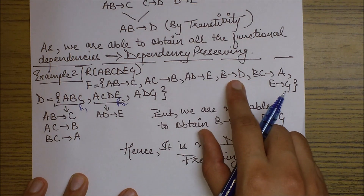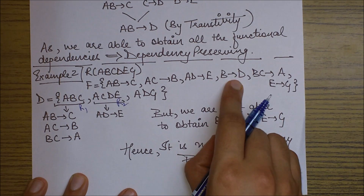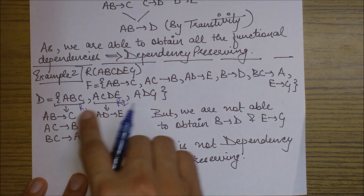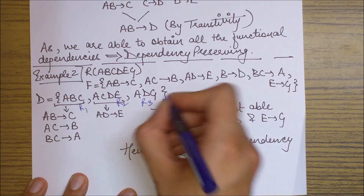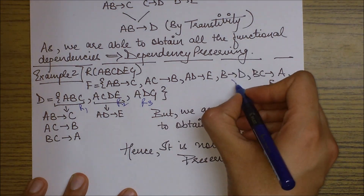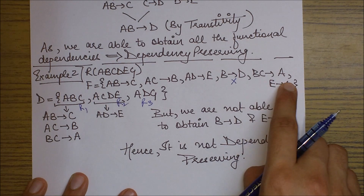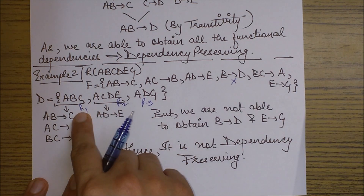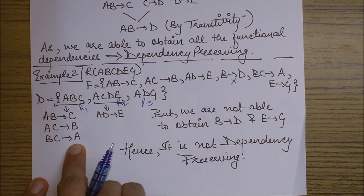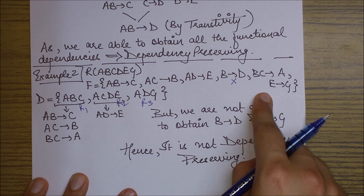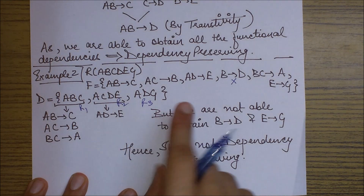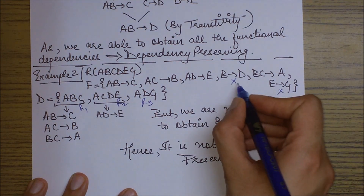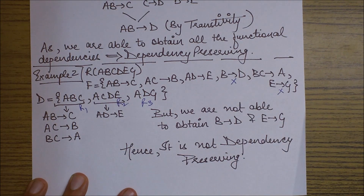Now we check B goes to D — B and D are never present together in any sub-relational schema R1, R2, or R3, so I am not able to derive this. Then BC goes to A: yes, I can obtain this from R1. Next, E goes to G — E and G are never present together in any of the sub-relations, so I am not able to obtain these two functional dependencies from any possible combination.